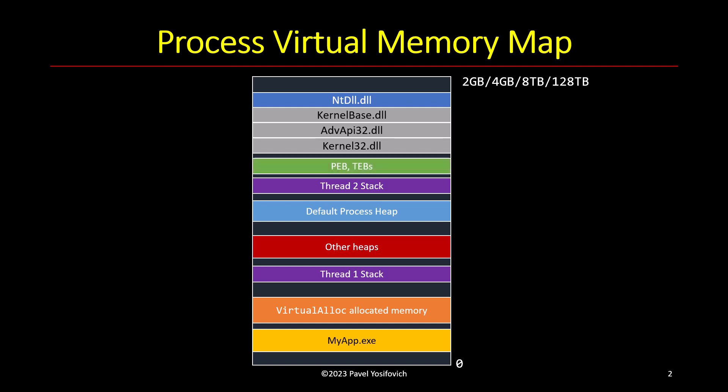There's also the Process Environment Block and Thread Environment Block data structures for each thread. So essentially we have this address space filled with all this stuff, though in most real cases the space is not nearly as full as this diagram suggests — it's just for demonstration purposes.